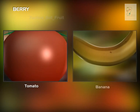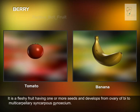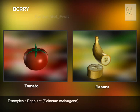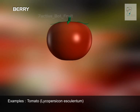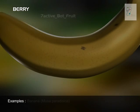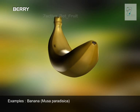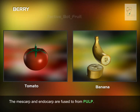Berry: It is a fleshy fruit having one or more seeds and develops from the ovary of bi- to multicarpellary syncarpous gynoecium. Examples include Eggplant (Solanum melongena), Tomato (Lycopersicon esculentum), and Banana (Musa paradisiaca). The mesocarp and endocarp are fused to form pulp.